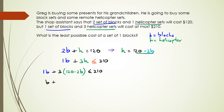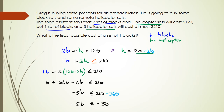We need to expand the brackets: 3 times 120 is 360, and 3 times negative 2B is negative 6B, so the expression is less than or equal to 210. Combining B minus 6B gives negative 5B, which is less than or equal to 210. Shifting 360 to the other side gives negative 5B less than or equal to negative 150.